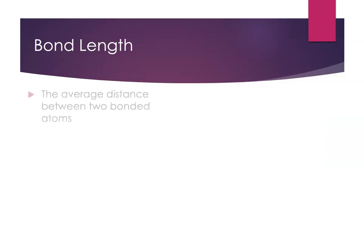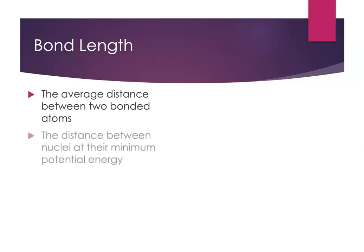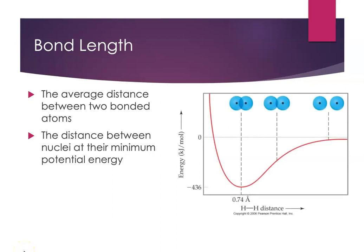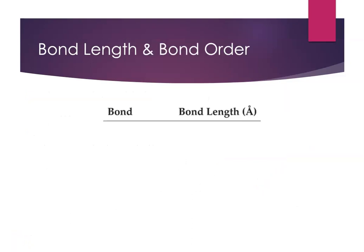Let's turn our attention to bond length — the distance between atoms. We define bond length as the average distance between two bonded atoms, or the distance between the nuclei when they're at their minimum potential energy. Energy is released when a bond is formed, and at the energy minimum the distance between the nuclei is as small as you can get and still have the atoms stay together.